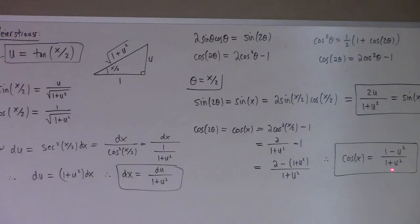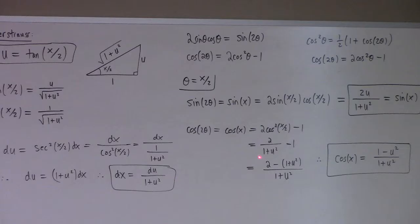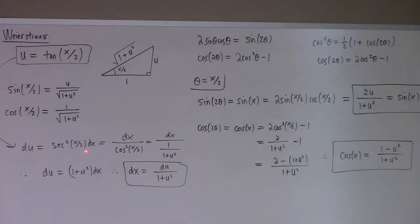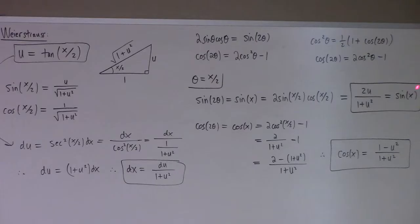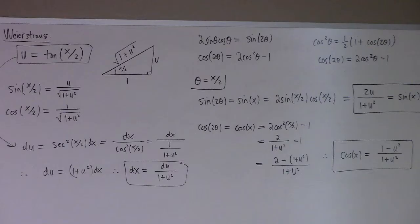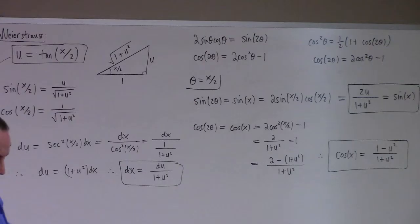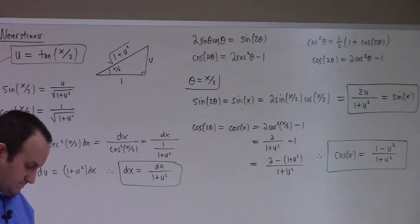Conversely, if I look at cosine of 2 theta, that's cosine of x, which gives me 2 over 1 plus u squared minus 1. Making a common denominator and simplifying, you get cosine of x is 1 minus u squared over 1 plus u squared. The other tool we need is the differential. If I take du, I get secant squared(x/2) dx, which is 1 over cosine squared, which is 1 over 1 plus u squared. So du is (1 plus u squared) dx, meaning dx is du over 1 plus u squared.